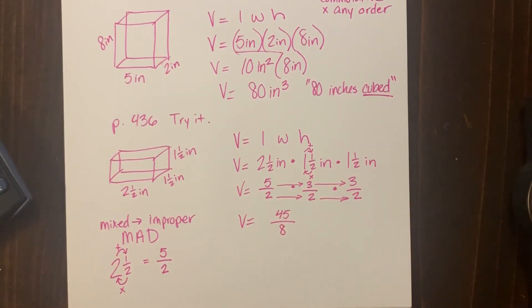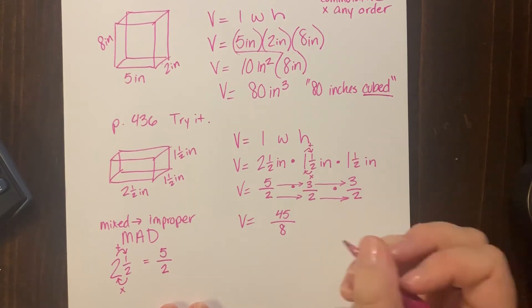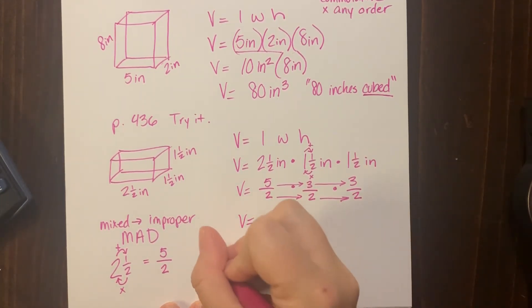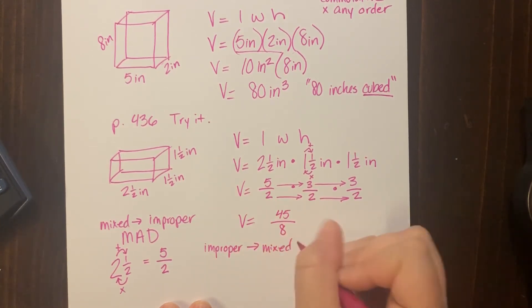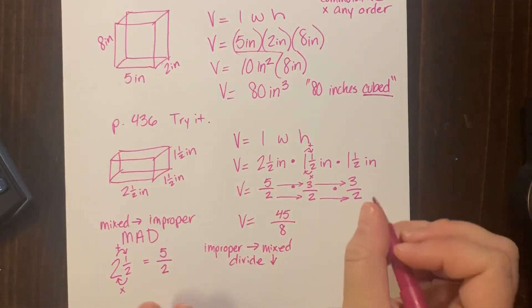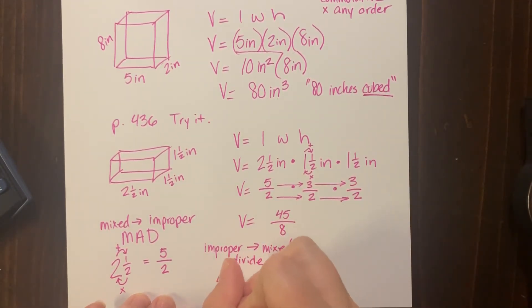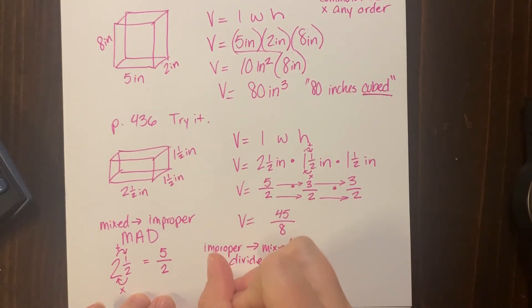All right, now can you turn in this improper fraction to Miss Rhodes? Oh, I'm so glad you said no. That would be a big no-no on your part. How do we fix an improper back to a mixed? We divide. How do we divide? Top to bottom.